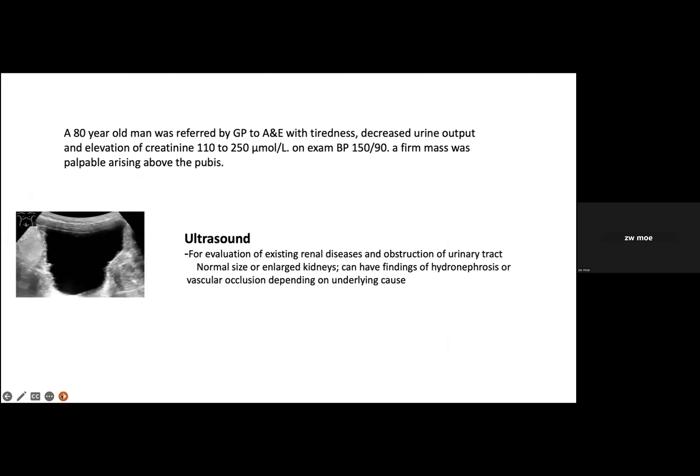A case: an 80-year-old man referred by GP to A&E with acute renal failure, tiredness, reduced urine output, and creatinine rising from 110 to 250. Blood pressure is acceptable. On examination, a firm palpable mass is found from the pubic area. Ultrasound is performed and shows bladder outlet obstruction. Ultrasound is important when obstruction is suspected or when intrinsic renal cause is considered, as kidney biopsy may be needed — requiring knowledge of kidney size and any cysts.